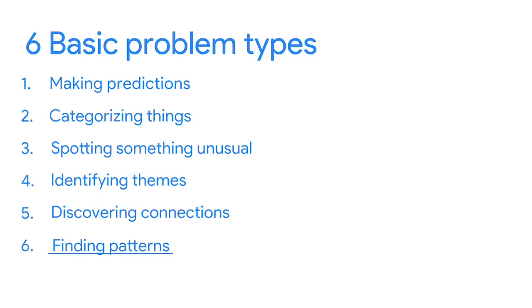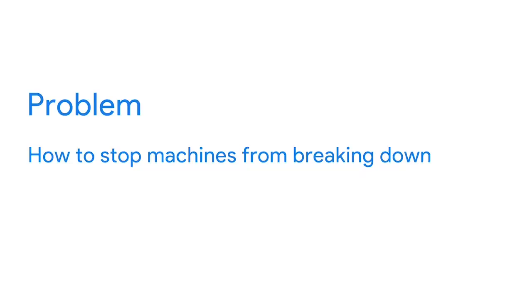Our final problem type is finding patterns. Oil and gas companies are constantly working to keep their machines running properly. The problem is how to stop machines from breaking down. Data analysts can look at patterns in historical data — investigating how and when a particular machine broke down in the past to generate insights into what led to the breakage. In this case, the company saw a pattern indicating that machines began breaking down at faster rates when maintenance wasn't kept up in 15-day cycles. They can then track current conditions and intervene if those issues happen again.